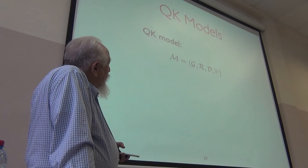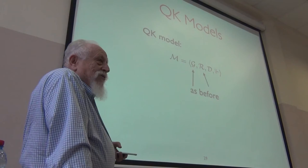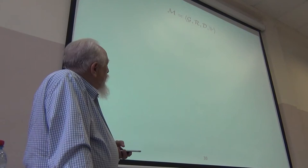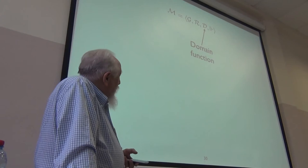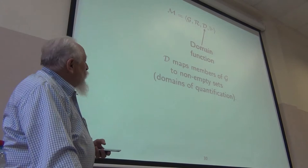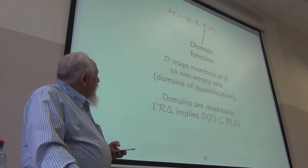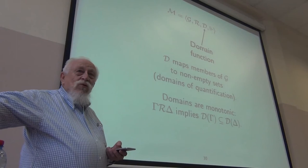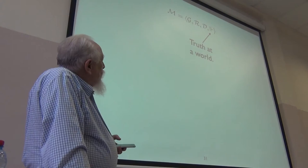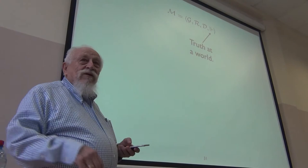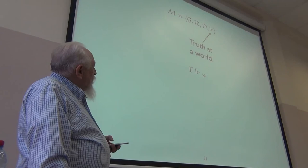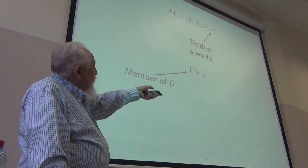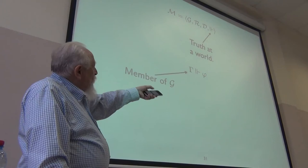QK models have a little more structure. The possible worlds and accessibility are as before. The new thing is a domain function — a varying domain function that maps possible worlds to non-empty sets. I'm assuming it's monotonic: if you move to an accessible world, everything you had, you still have. The rest is the same — truth at a world at the atomic level is arbitrary. Boolean connectives behave in the usual fashion at each world.